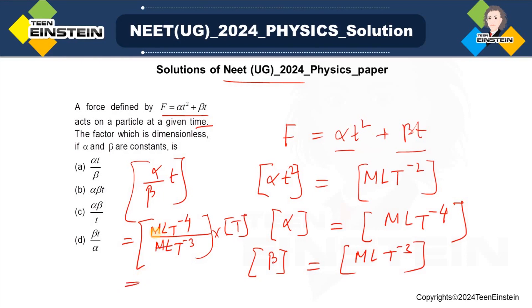See, this ML, ML cancels each other, and you get T to the power minus 1 out of it, and you get already T over here. T into T to the power minus 1, this will be actually having 0 dimension.